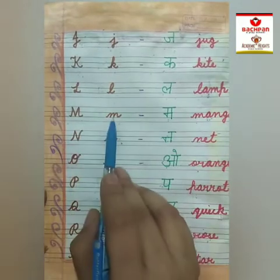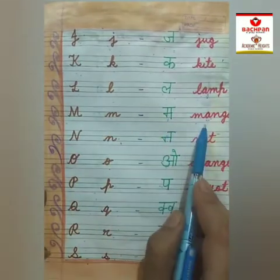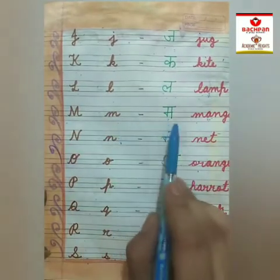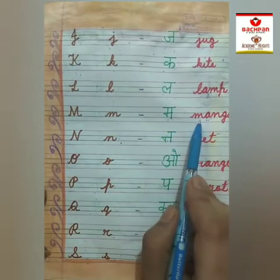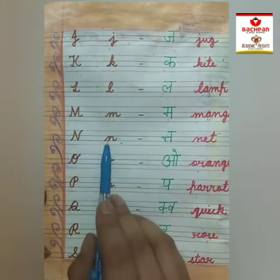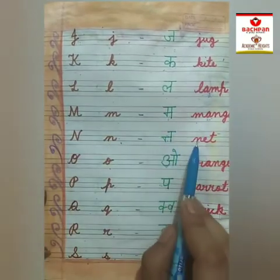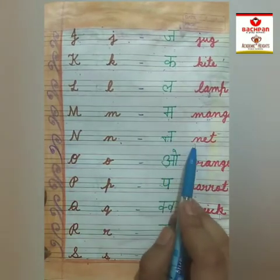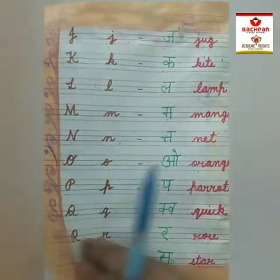M says M — mango. M says M — mango. N says N — net. N says N — net.